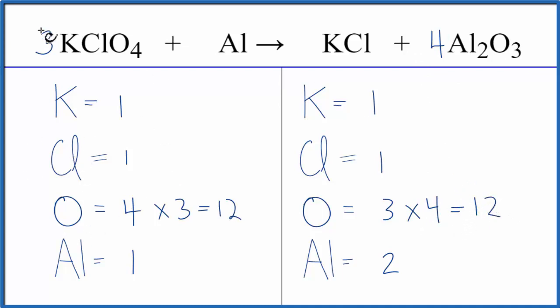But I have to update everything else because the three, it applies to everything, and this four, it applies to everything here. So I have one potassium times three, that gives me three. One chlorine times three, that gives me three chlorine atoms. We've already done the oxygens, we have twelve,